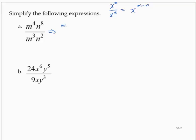So I can take this single fraction and think of it as two fractions, m to the fourth over m to the third times n to the eighth over n to the second. And then using that rule for exponents, I would have m to the 4 minus 3 times n.